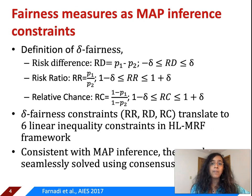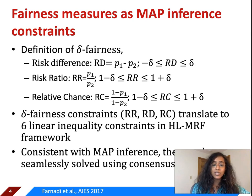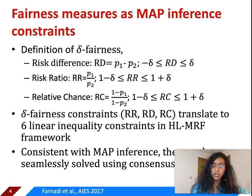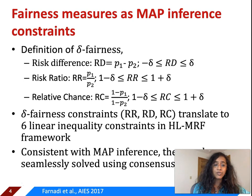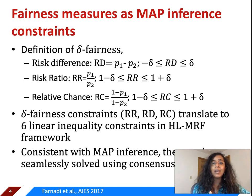For fairness measures as MAP inference constraints, we derive linear inequality constraints constructed based on recently developed delta fairness constraints, which follow the definitions of risk difference, which measures the difference in risk; risk ratio, which measures the ratio; and relative chance, which measures (1 minus p1) divided by (1 minus p2), where p1 and p2 are the probability of denial for different groups.